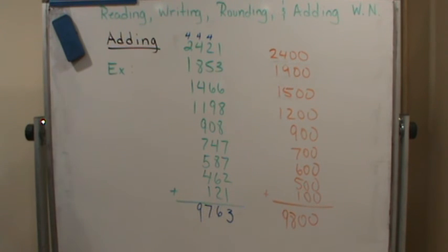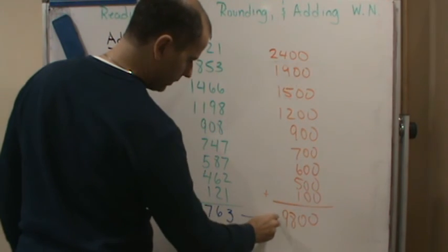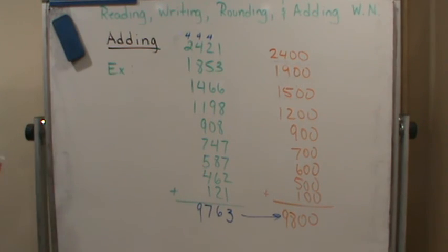And so I get 9,763, which is very close to 9,800. So the total number of trades workers that were needed for this project turned out to be 9,763 people.